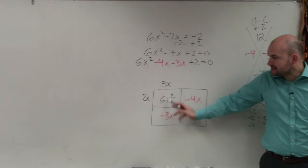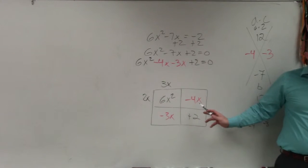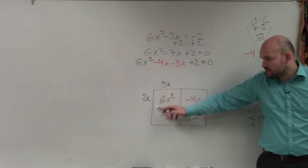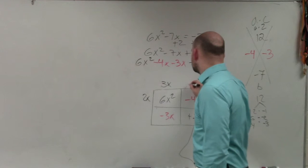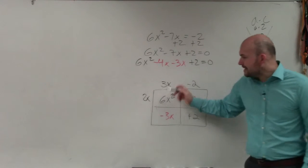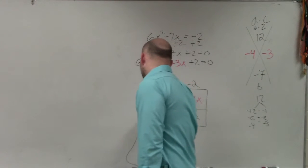Because now, 2x times 3x gives you 6x squared. 2x times what gives you negative 4x? Because remember, 2x is the height. So 2x times what gives you negative 4x? Negative 2. And then 3x times what gives you negative 3x? Negative 1.